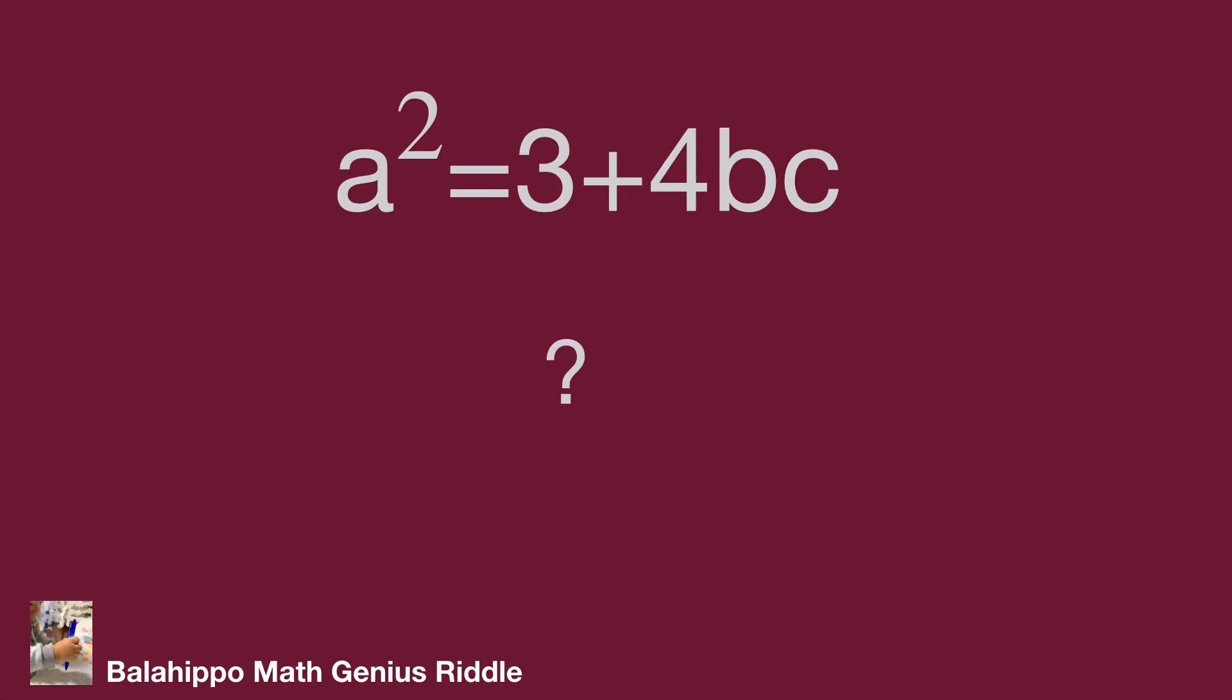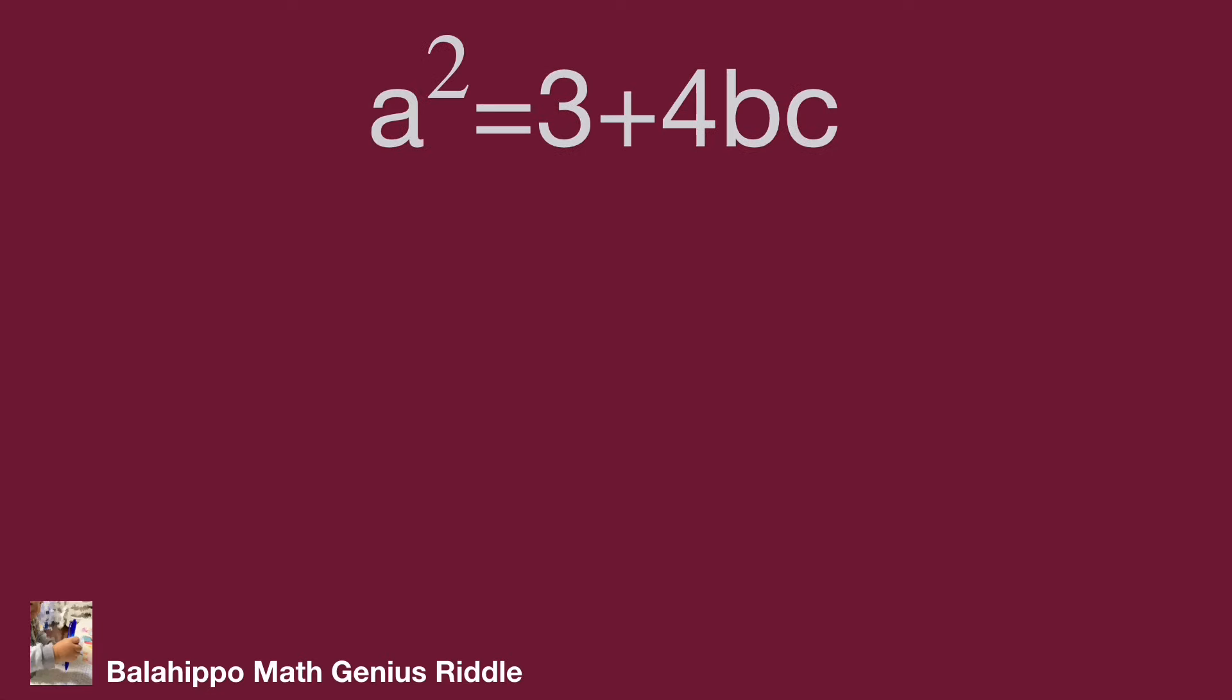Okay, let's check from the value of a. Since a squared equals 3 plus 4bc, and b, c are positive integers, this means bc is greater than or equal to 1. Then 3 plus 4bc is greater than or equal to 7, so a squared should be larger than 7. Let's start from a equals 3.